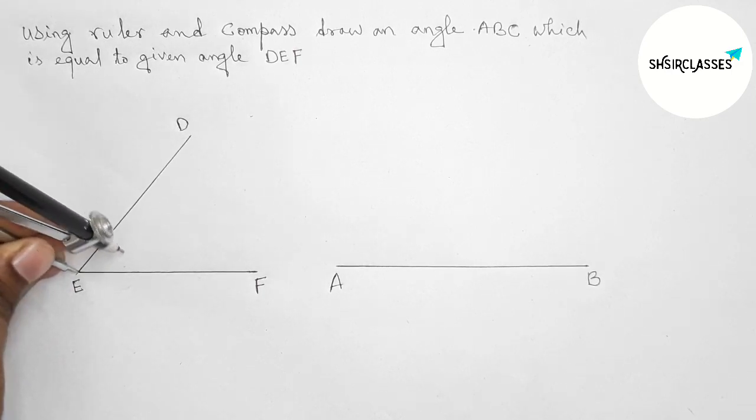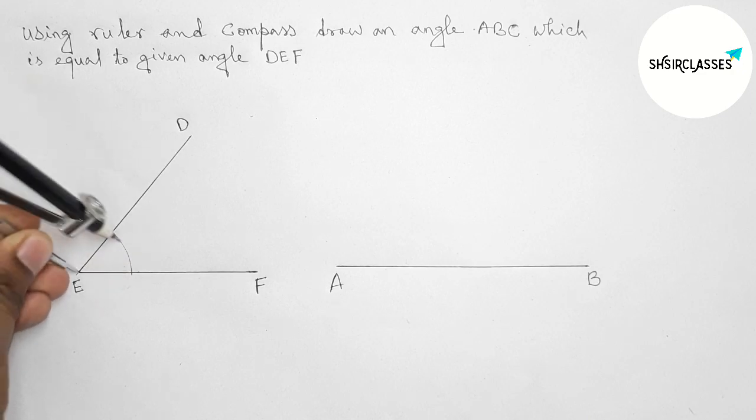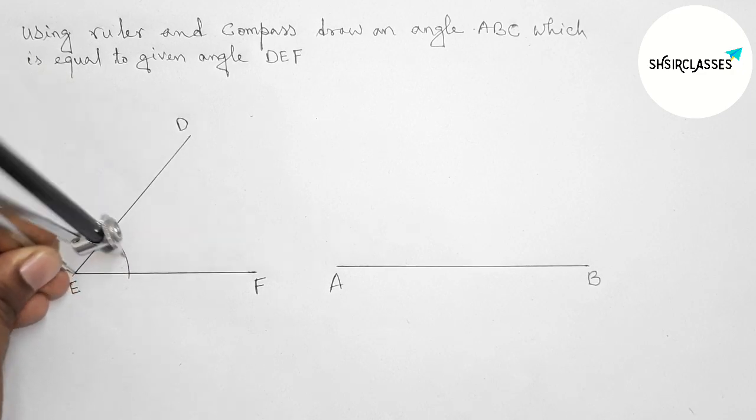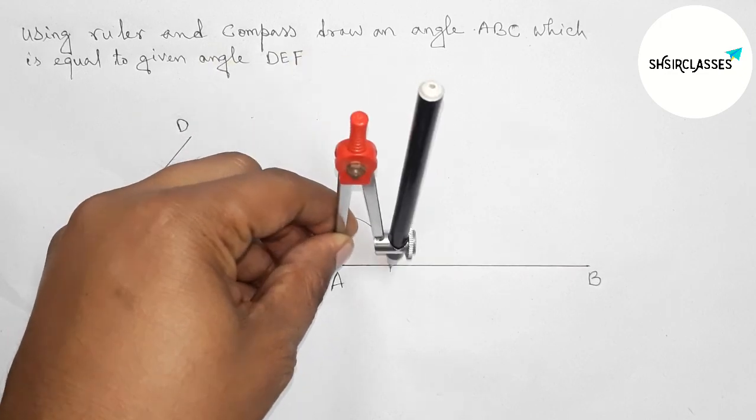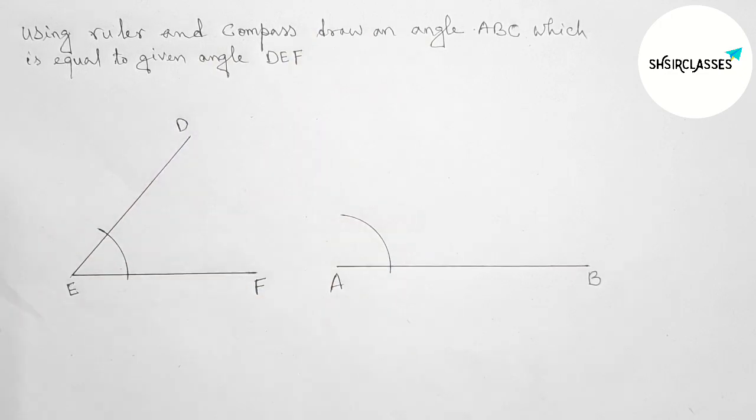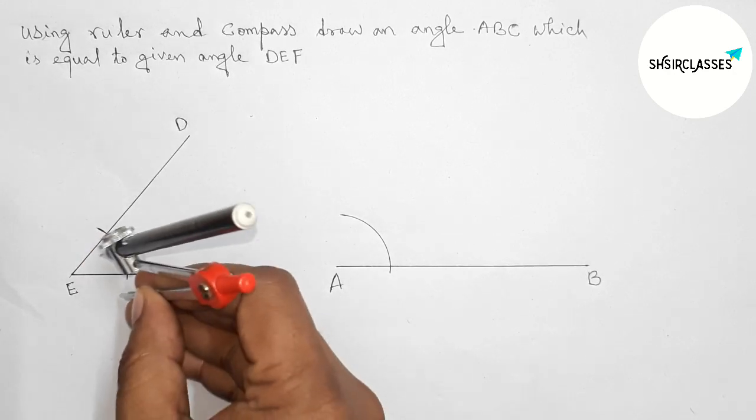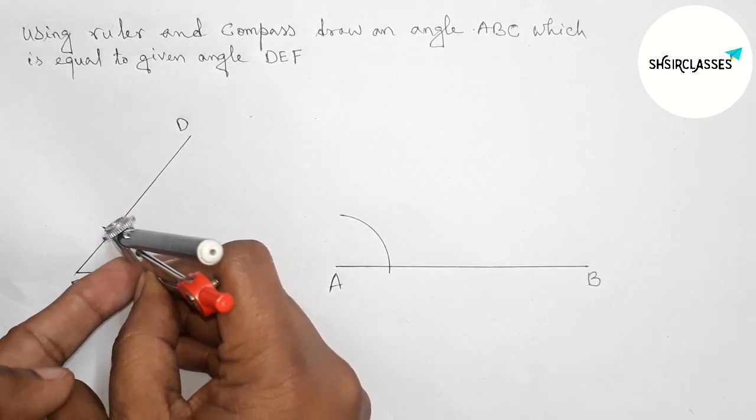on the point E and taking any length and first drawing here arc by this way and putting the compass on the point A and drawing arc by similar way. Next, taking this length with the help of compass